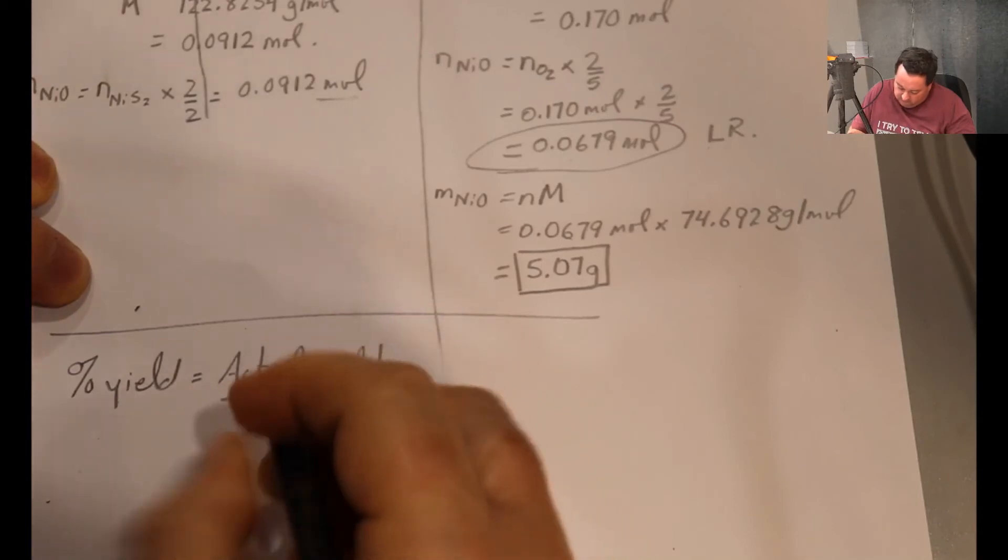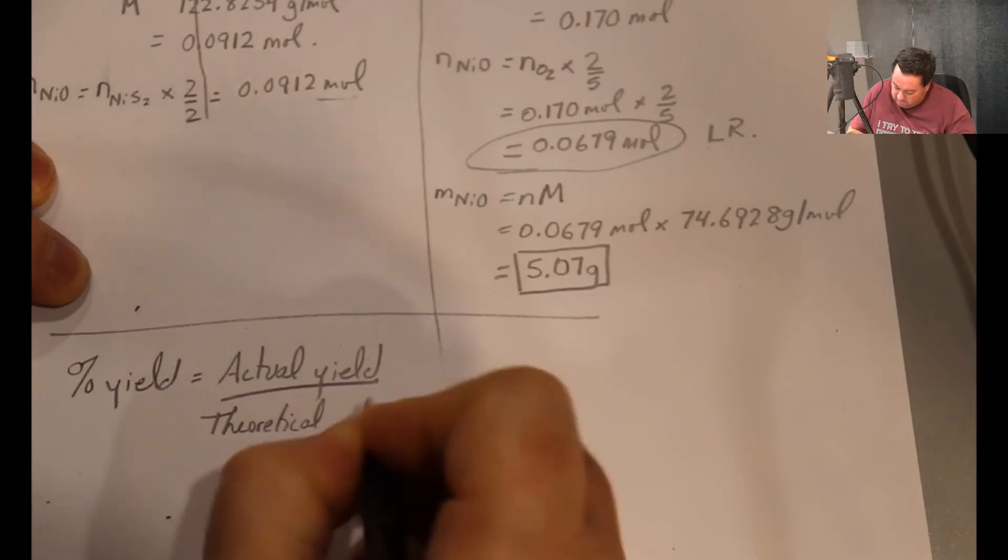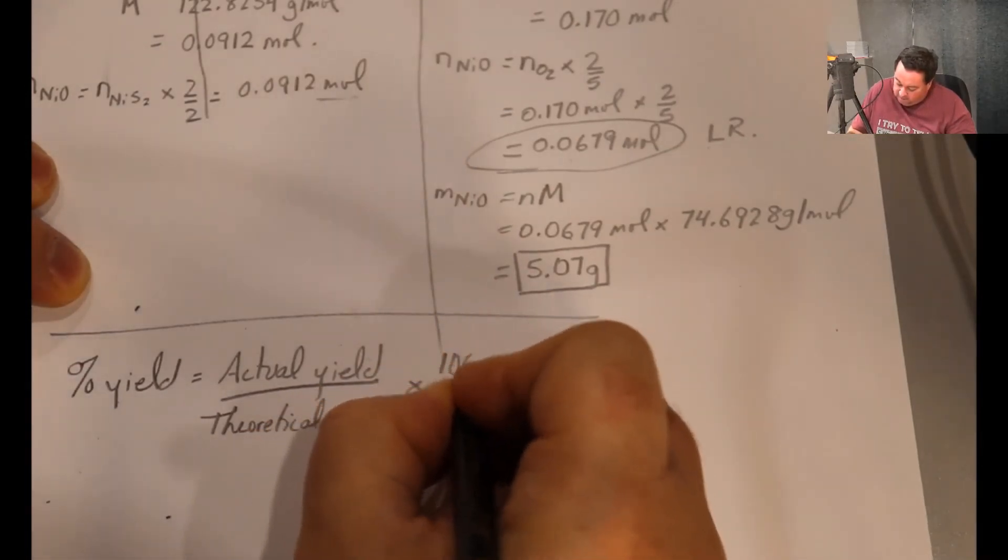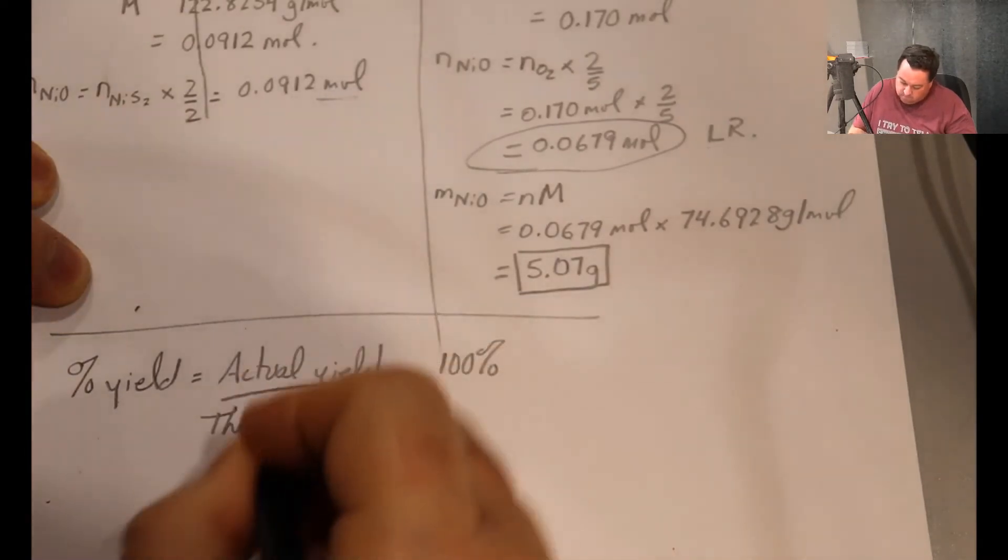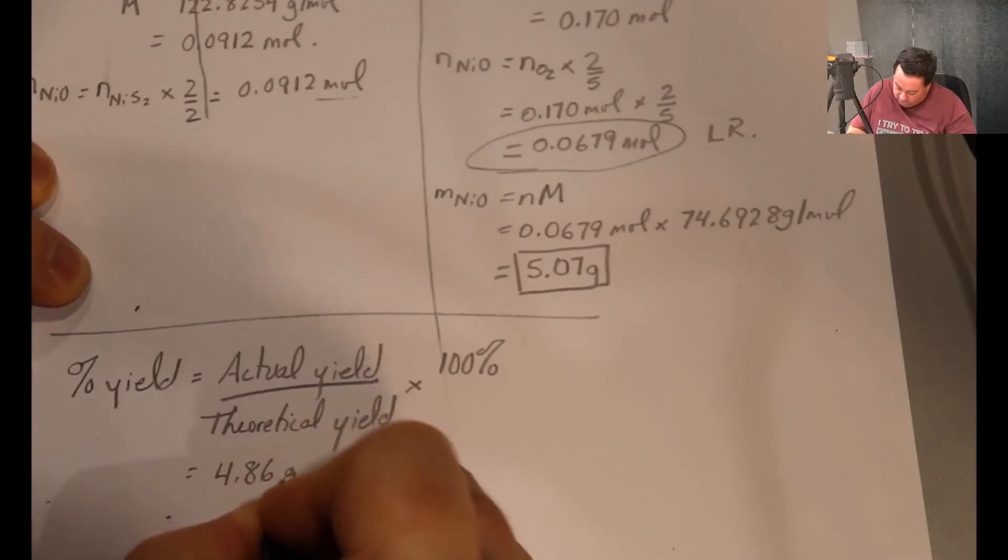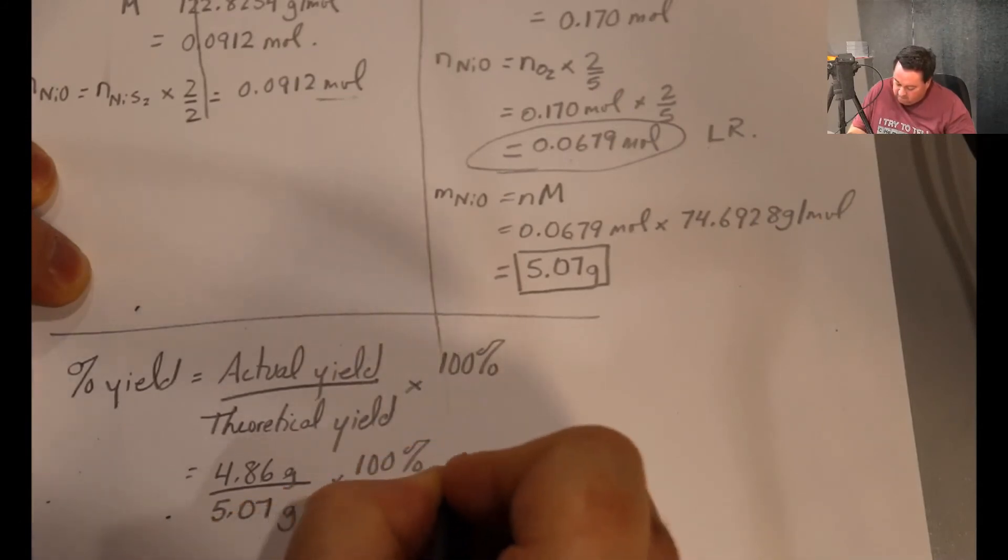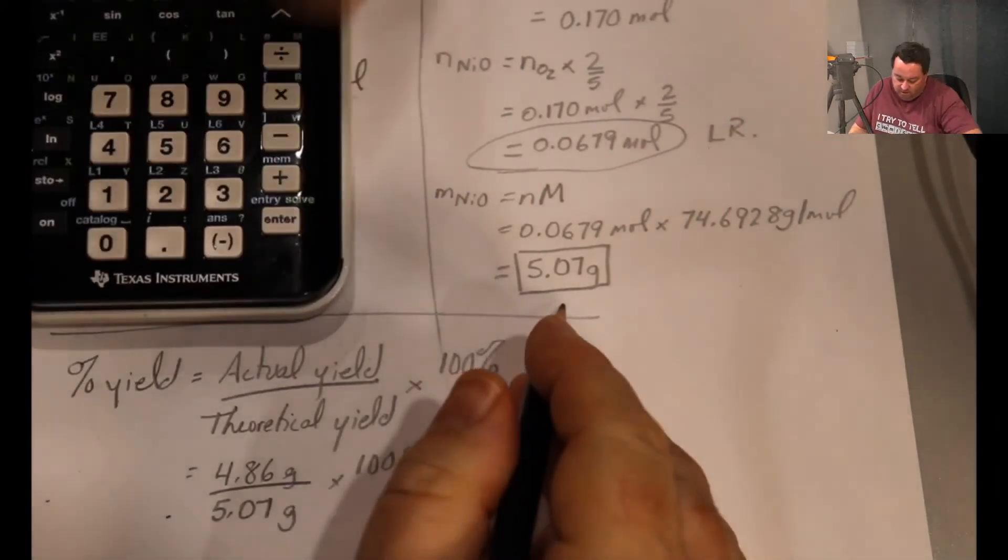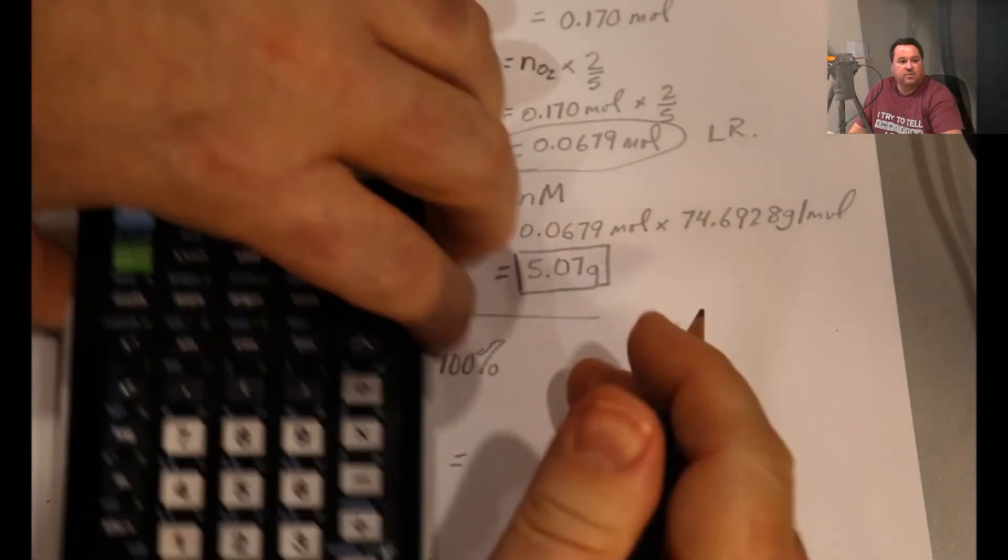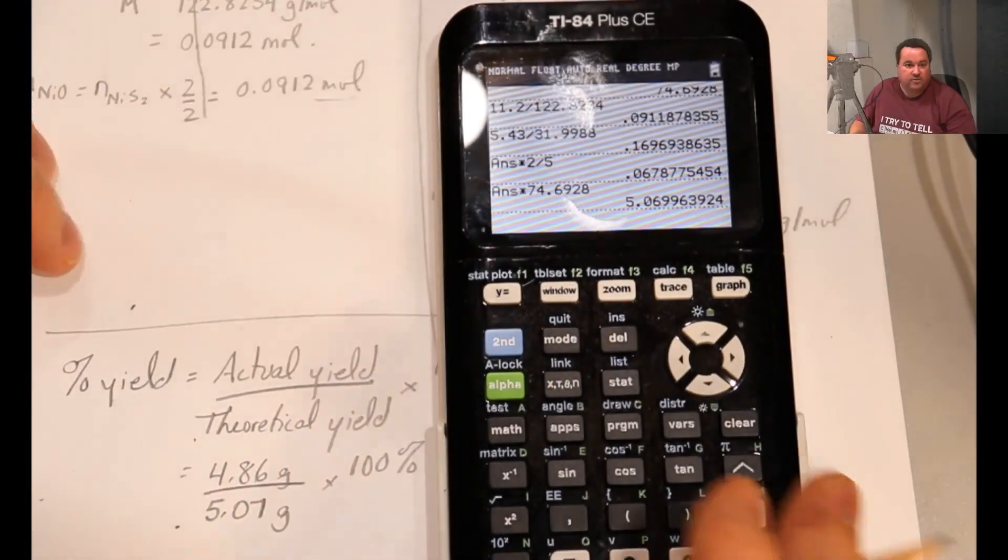Is the actual yield over the theoretical yield times 100%. So 4.86 grams divided by 5.07 grams times 100%. This number should still be on my screen, and it is. So all I have to enter is 4.86.